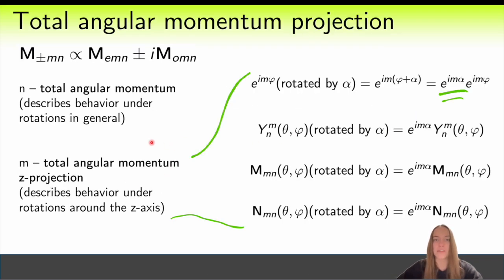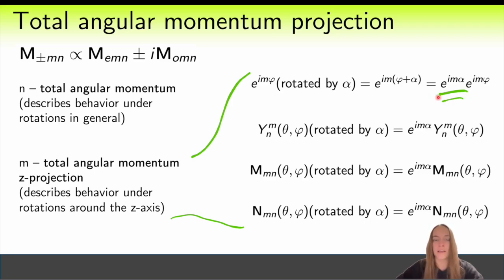Another important index is M — the projection of the total angular momentum onto the Z axis. It fully describes the behavior of the functions under rotations around Z. Let's consider a simple complex exponent e^{imφ}. Rotating it by an angle alpha, you just replace phi with phi plus alpha, and we see that the rotated function equals the original function multiplied by e^{imα}. It turns out that all functions with a given projection of the total angular momentum behave exactly the same way under rotations — whether it's a scalar spherical function or a vector spherical harmonic — they ultimately just get multiplied by this exponential factor.